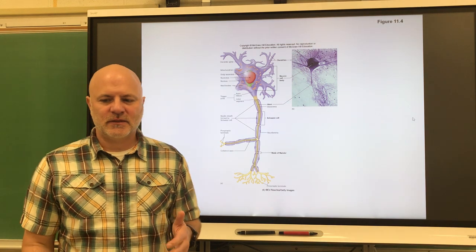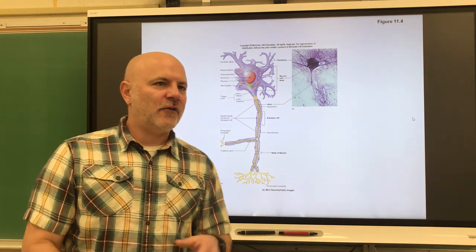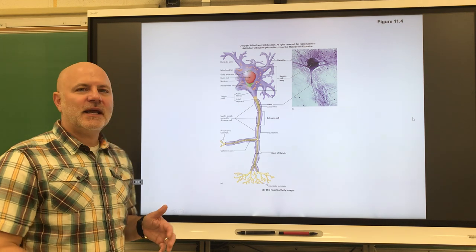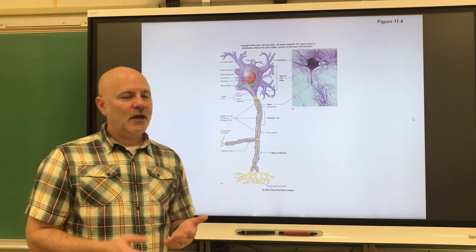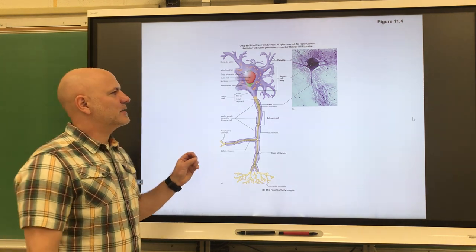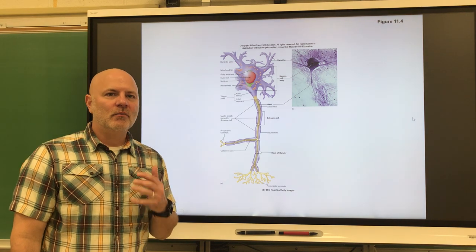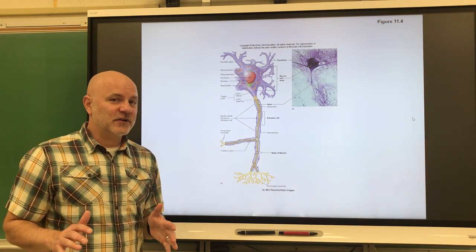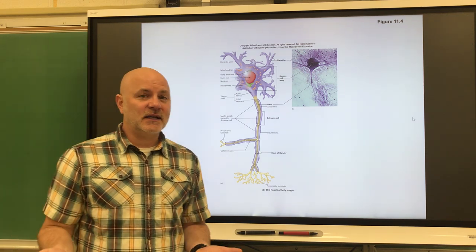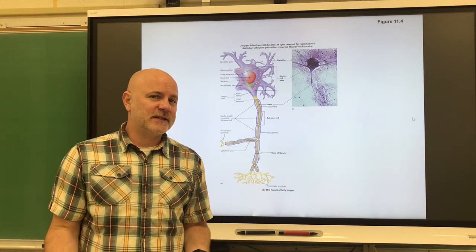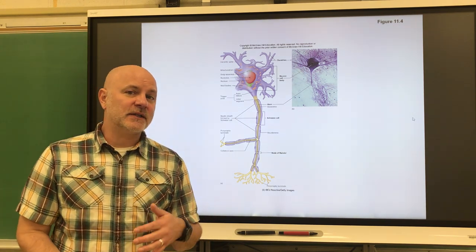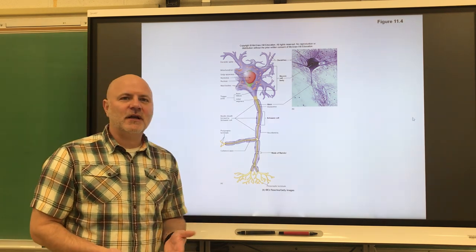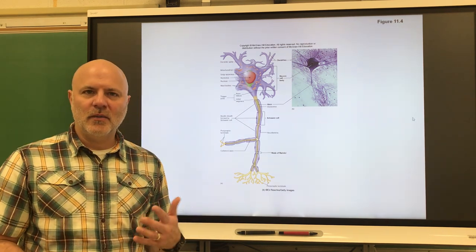Let's move on to histology of the nervous system. We're going to start off with a neuron — a nerve cell. These nerve cells that we have in our body are long-lived. Most of them will live as long as we do, which is very different from a lot of other cells in our body. Skin cells live about a month, red blood cells a couple months, but our nerve cells live as long as we do in most cases.